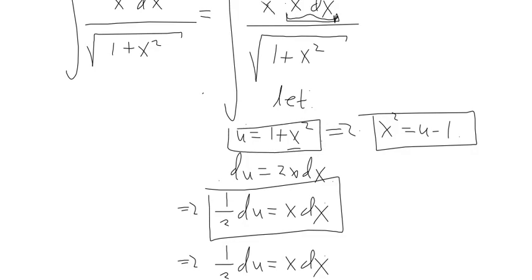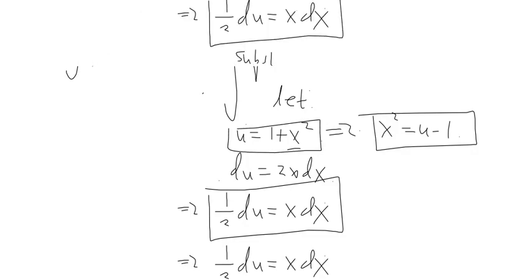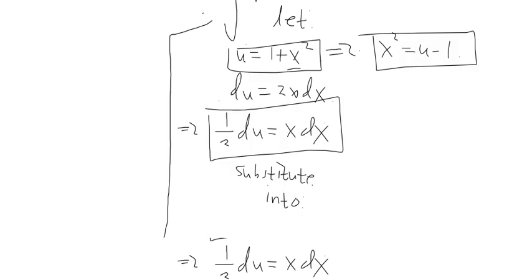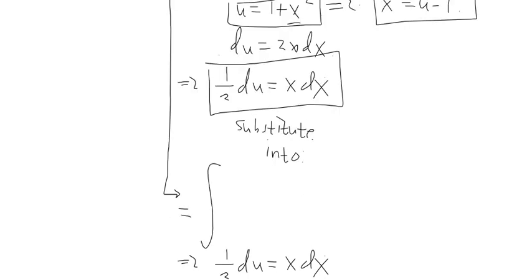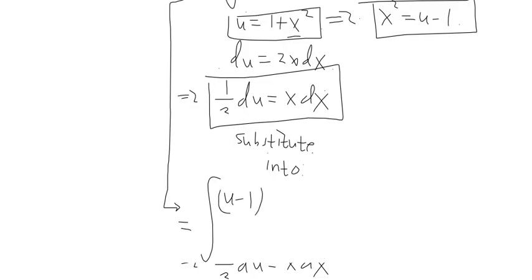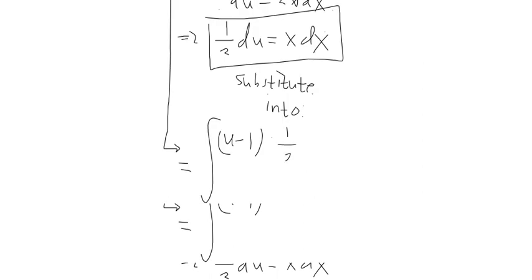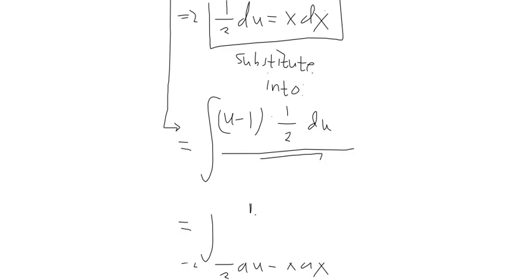We're going to substitute all this information into the integral. This integral is now equal to the integral of (U minus 1) times 1 half DU all over the square root of U. The 1 half goes to the front: 1 half integral of U minus 1 with respect to U over the square root of U.